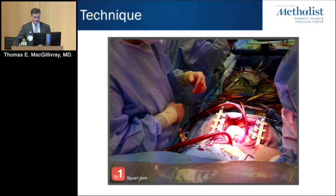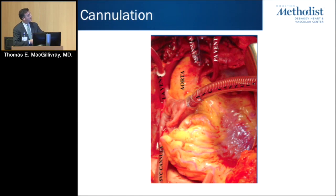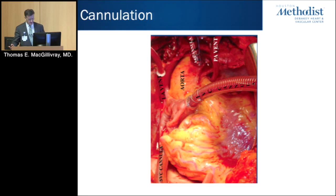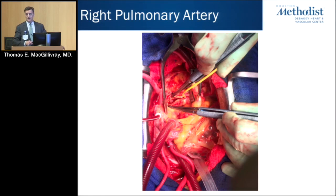These are done through a sternotomy. When you cannulate the patient for bypass — the head is up here, feet down here, this is the patient's right, the patient's left — you usually cannulate the distal ascending aorta, put two cannulas, one into the superior vena cava and one into the inferior vena cava, go on bypass. Then the heart shrinks up because you take all the blood away, and you cool down to usually about 20 or 18 degrees.